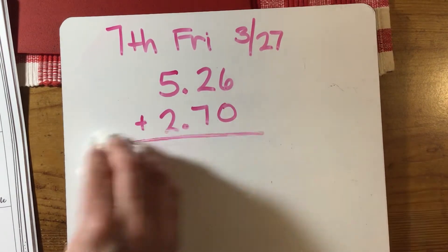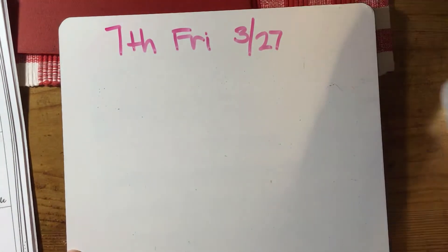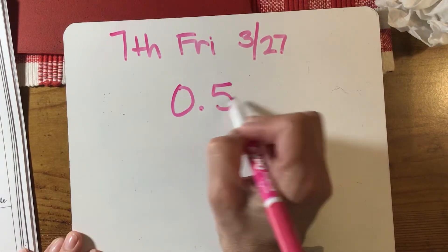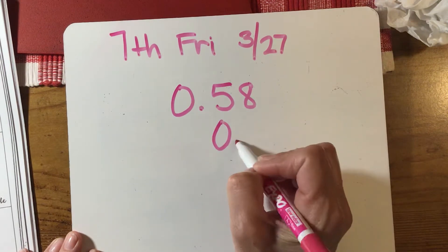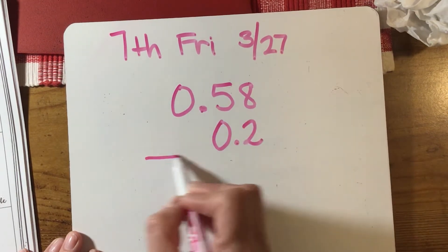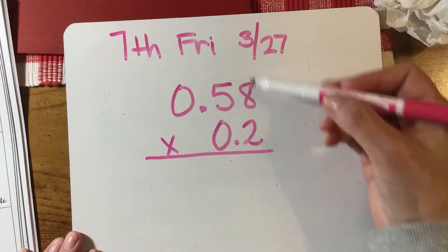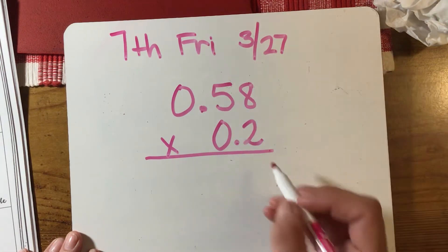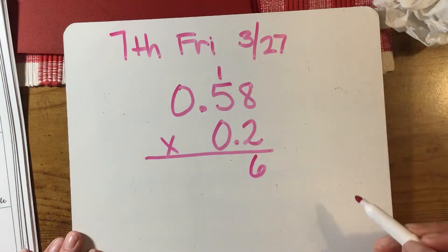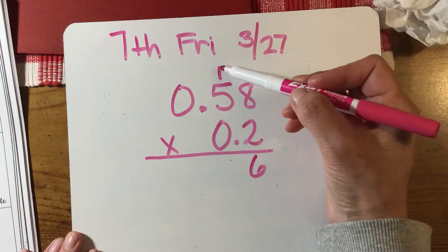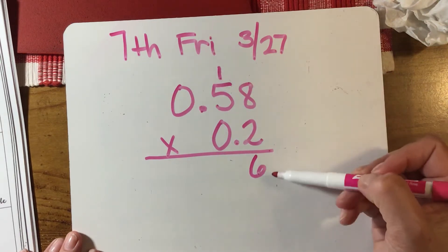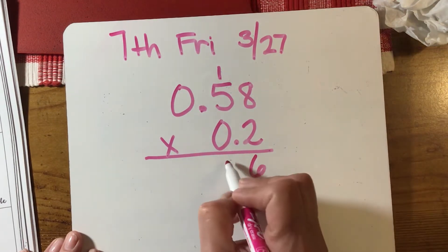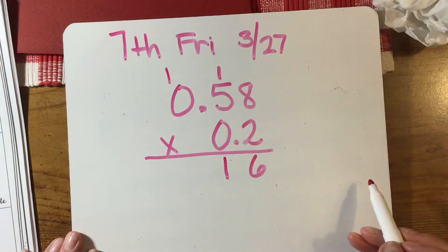I'm going to look at number four on your packet: 0.58 multiplied by 0.2. Notice I did not line up my decimals, but I did try to keep my numbers in order. We're going to do regular multiplication. Start in your ones place: two times eight is sixteen. You need to regroup—the one goes in the tens place, so the one goes up here and the six goes down here. Two times five is ten, plus one more is eleven.